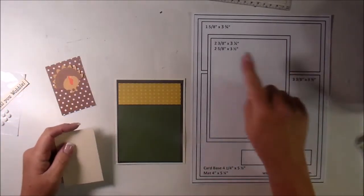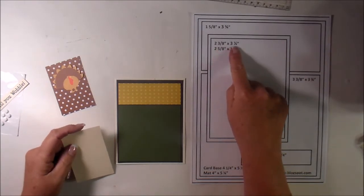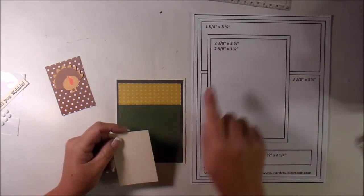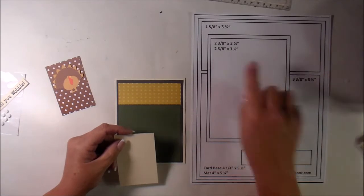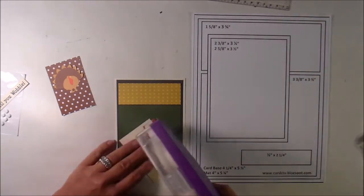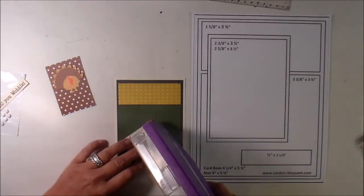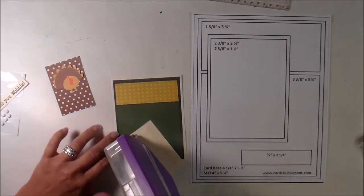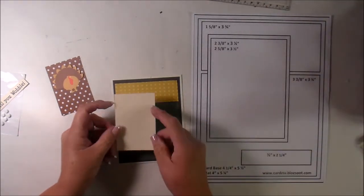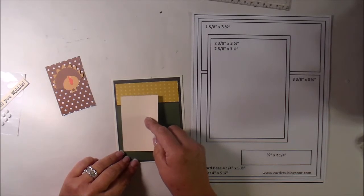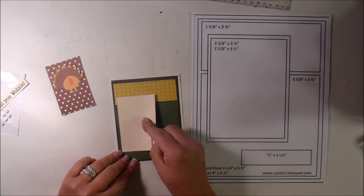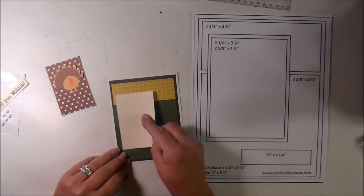Then we're going to go to the two and three eighths by three and a quarter, and the two and five eighths by three and a half. Yeah, I can put this down first. And she has it over to the side a little bit. So we're going to put that right there. Make sure that I'm all even steven, up a little bit more.